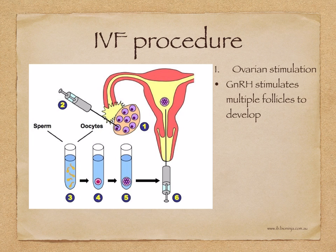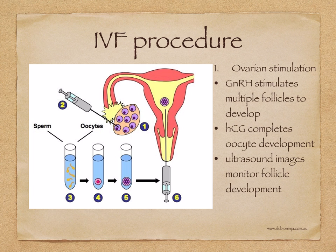The first step of the IVF procedure is ovarian stimulation. A fertility drug, for example gonadotrophin-releasing hormone, is administered to the female. This stimulates the development of multiple follicles within the ovaries. A dose of human chorionic gonadotrophin is then given to complete the oocyte development in these follicles. Ultrasound images are used to monitor the follicle development.